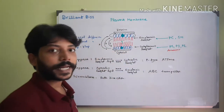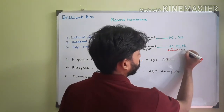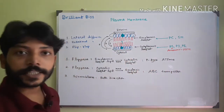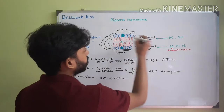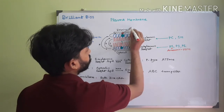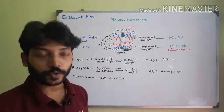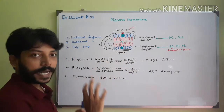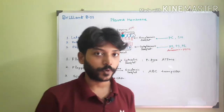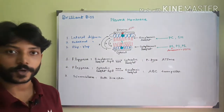We tag annexin-5 with a fluorescent tag such as FITC. So annexin-5 tagged with FITC can bind with the phosphatidylserine molecule. By flow cytometry, you can understand whether a cell is undergoing apoptosis or not. During apoptosis, phosphatidylserine moves to the exoplasmic leaflet, whereas in healthy cells, most of the phosphatidylserine is present in the cytosolic or cytoplasmic leaflet.